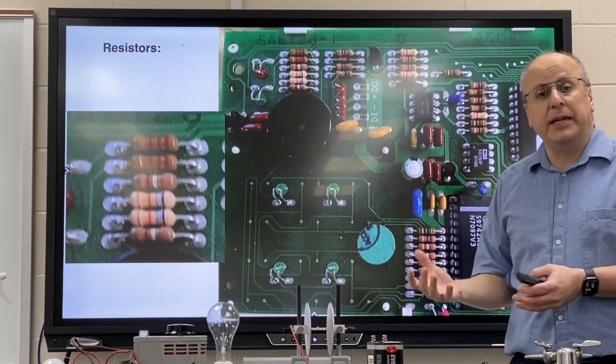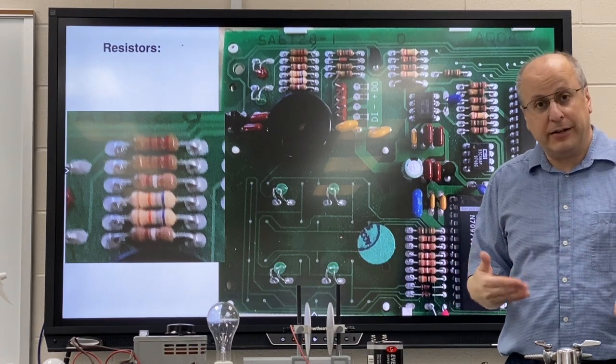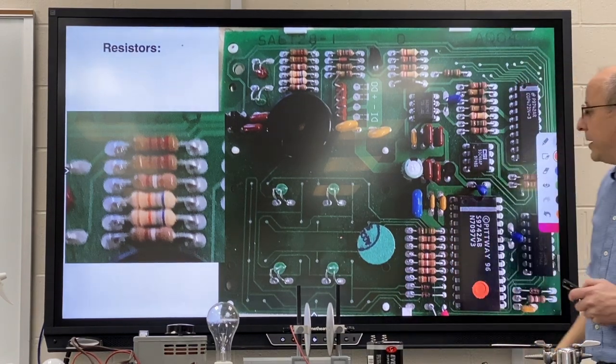There's so many different resistors so we can control how much gets to different parts of the circuit. Some areas might need more, some areas might need less current. The resistors will help us control that.